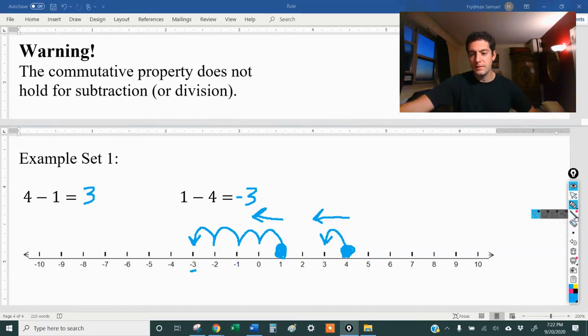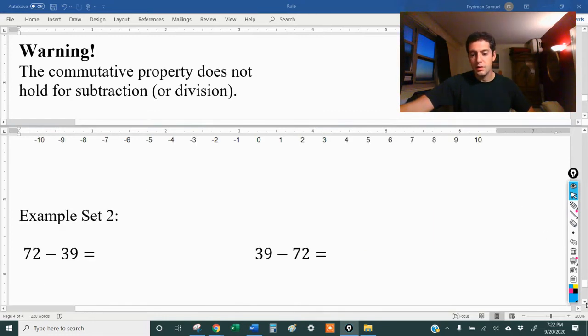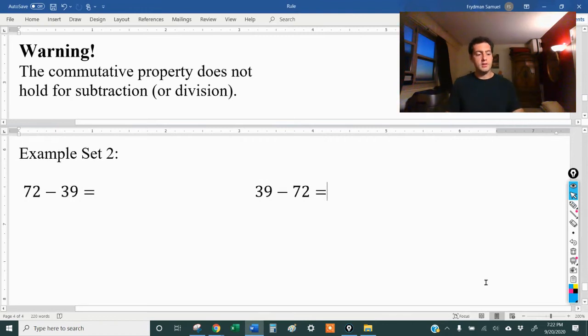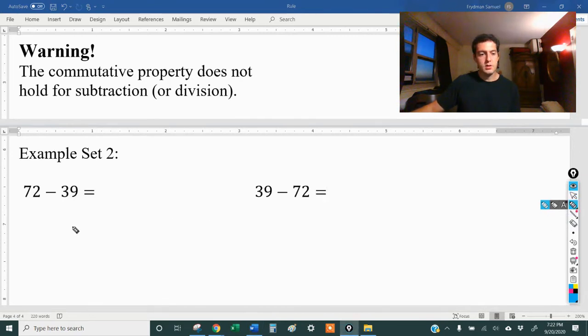Let's do one more quick example set, but this time I'm actually not going to use the number line. Let's just go ahead and do some work here. So 72 minus 39, let's do the work for that. Okay, so let's do it over here: 72 minus 39.